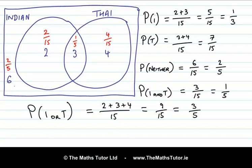We could also express these probabilities in decimal form. 2 over 5 is 0.4; 2 over 15 is 0.13 recurring, so we'll round it to 0.13; 1 fifth is 0.2; and 4 fifteenths is 0.26 recurring, so we'll round it to 0.27. If you add these up, you'll see they add up to 1.